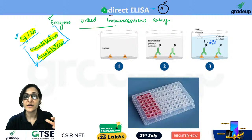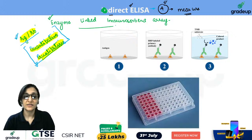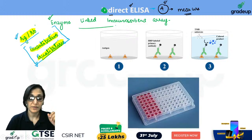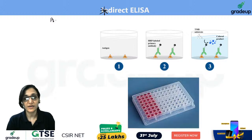Along with the four types, I will also explain how quantitative determination is done in ELISA — how to measure the colored reaction result. Let's start with the first type, that is Direct ELISA. Direct ELISA is performed for antigen identification.